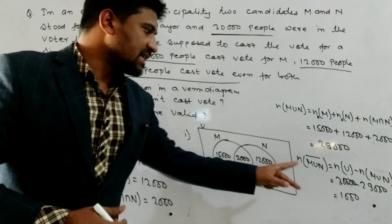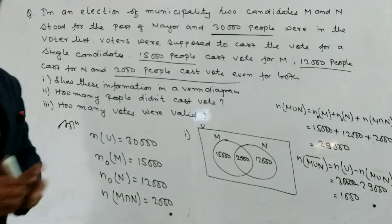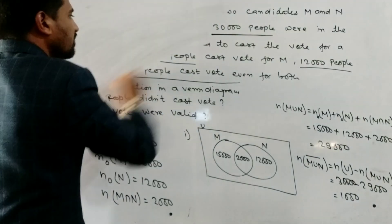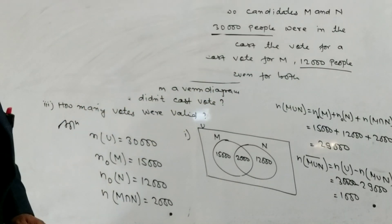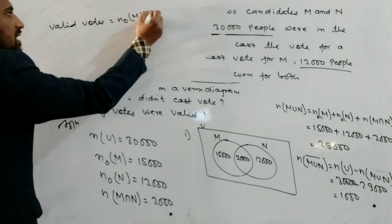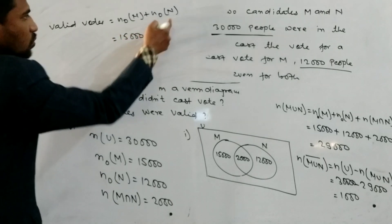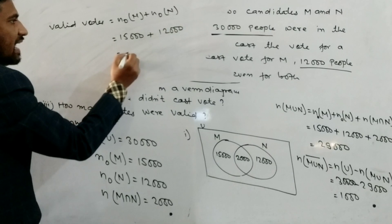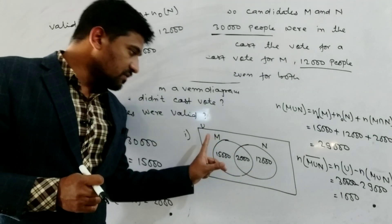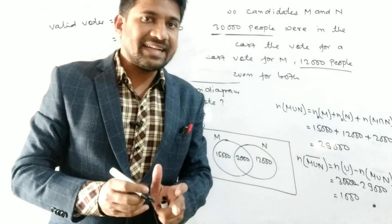For part three, how many votes were valid? Valid votes = n(only M) + n(only N) = 15,000 + 12,000 = 27,000. So 27,000 votes were valid. 2,000 votes were invalid because those people cast a vote for both M and N. And 1,000 people did not cast a vote at all.